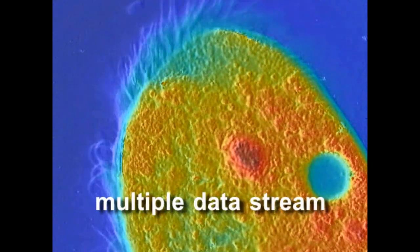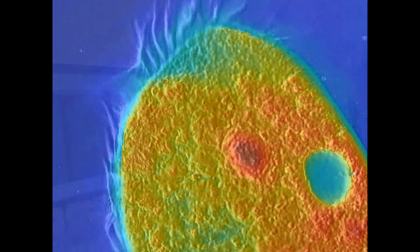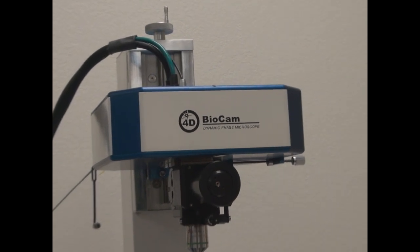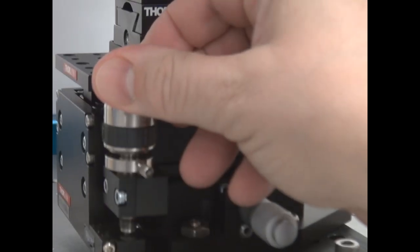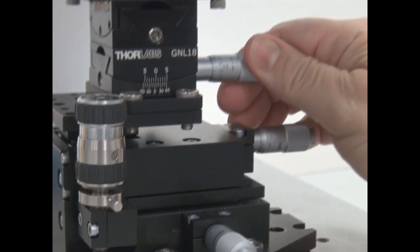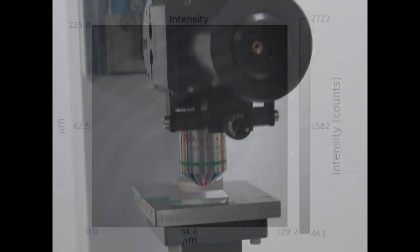What we've done is take that technology for the phase cam and apply it to a phase measuring microscope using a Linnik objective, and we can adjust the path length, the tilt of the sample, and the focus to be able to get a nice phase measure.